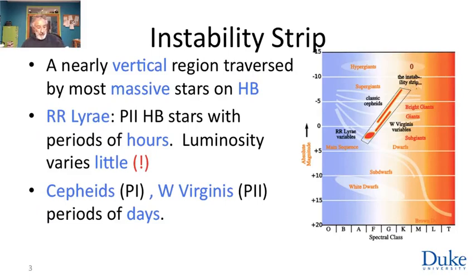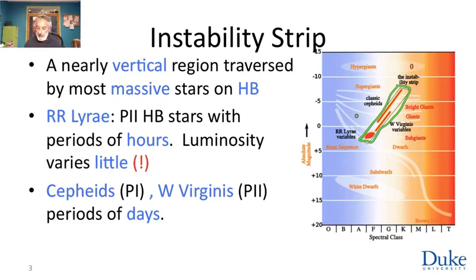The instability strip is this region on the HR diagram, which is almost vertical — almost determined by temperature. Most massive stars will cross it; the Sun will sneak under the instability strip for population one stars. There are three types of variables in the instability strip: Classic Cepheids, W Virginis variables — which is a fancy way of saying population two Cepheid variables — and RR Lyrae variables, which sit in a very narrow region.